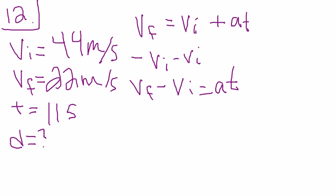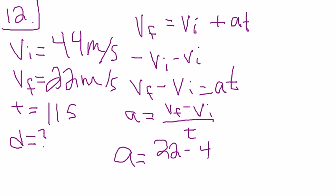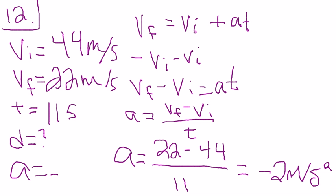So it's a equals final velocity minus initial velocity divided by time. Then you plug in the numbers and you get 22 minus 44 divided by 11 which equals negative 2 meters per second squared. So the acceleration is negative 2 meters per second squared.